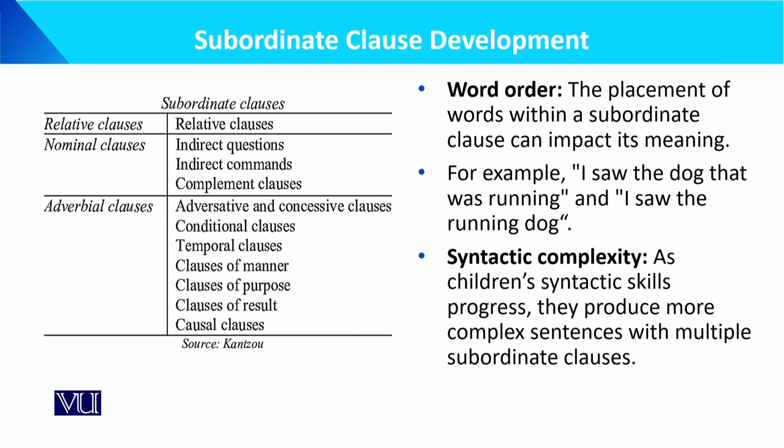In the first sentence 'that was running' is used with 'that' to complete the clause. In the second sentence, instead of 'I saw the dog,' it becomes 'I saw the running dog.' In terms of syntactic complexity and grammatical structure, as children's syntactic skills progress, they produce more complex sentences with multiple subordinate clauses.